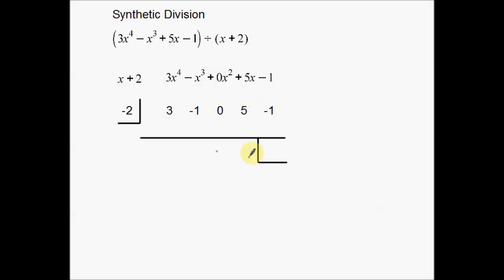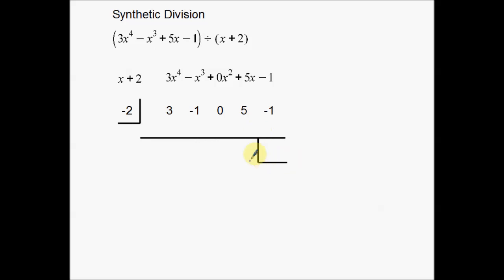Here's the setup: you have a number over here in a little half-box, then you have a row of numbers right here. You have a gap where we're going to put some more numbers, then a line, and then a box down here where there will be numbers as well. So the setup has your box, a row of numbers, a gap, a line, and then a three-quarters box down at the bottom.